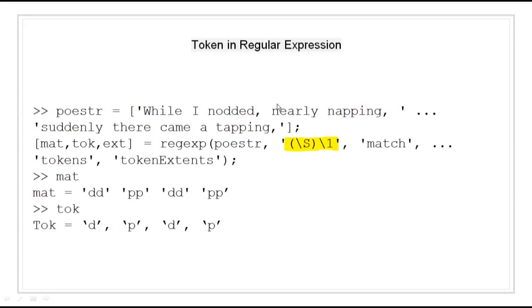One advantage of using tokens is that they remember what they matched, so you can recall and reuse matched text during searching or replacing. Each token in the expression is assigned a number starting from 1, going from left to right. To reference a token later in the expression, use a backslash followed by the token number — for example, \3 references the token generated by the third set of parentheses.